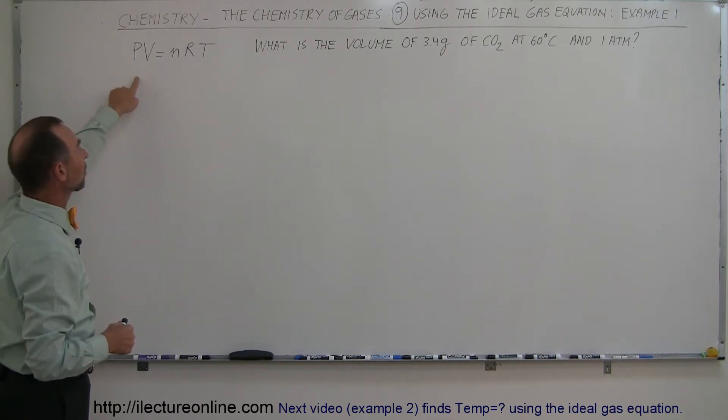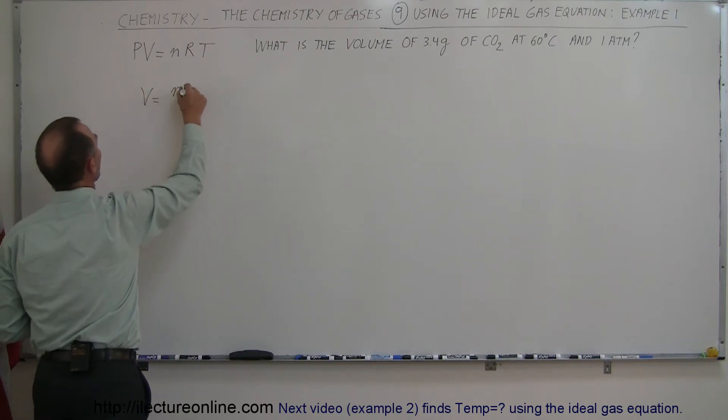So here's the equation, we want to solve this equation for V, divide both sides by P, so we end up with volume equals nRT divided by the pressure.